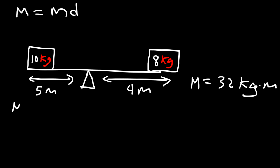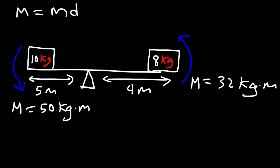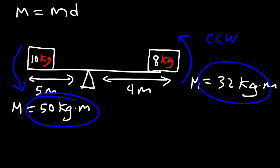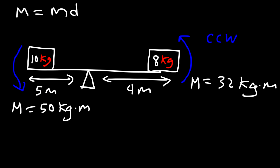For the second object, the moment is 10 times 5, which is 50 kg·m. By intuition, you know that this side is heavy, so the seesaw is going to rotate in a counterclockwise direction. The left side has a greater moment than the right side, so the seesaw is not balanced. But using these two masses, how can we balance the seesaw? If you place the fulcrum at the center of mass, the seesaw will be balanced.